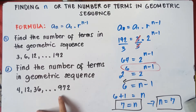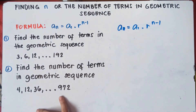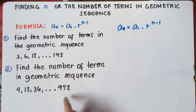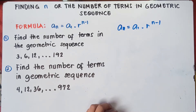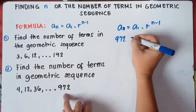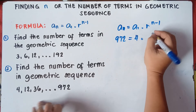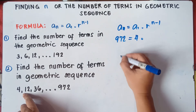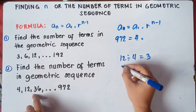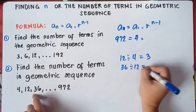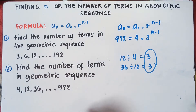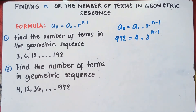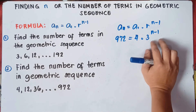Let's try number 2. Find the number of terms in the geometric sequence 4, 12, 36, and the last term is 972. First, substitute: the last term is 972 equals the first term 4 times r raised to the power of n minus 1. The common ratio: 12 divided by 4 is 3, and 36 divided by 12 is also 3. So the common ratio is 3, raised to the power of n minus 1.